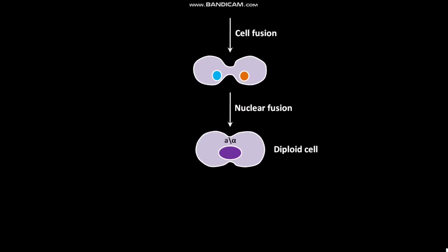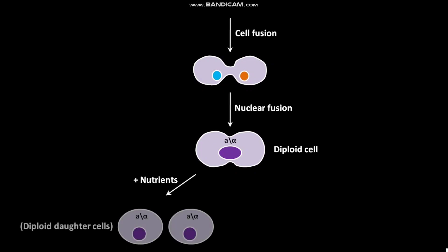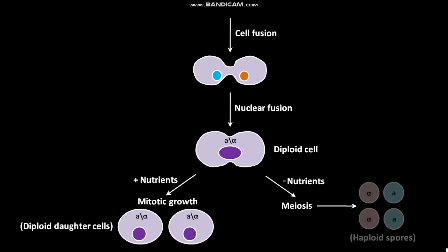This diploid A or alpha cell has one nucleus. In the presence of sufficient nutrients, the diploid A or alpha cell undergoes mitotic division and produces two diploid daughter cells — this is called mitotic growth. But in the absence of sufficient nutrients, the diploid A or alpha cell undergoes meiosis, leading to the formation of four haploid spores. The process of formation of spores is called sporulation.